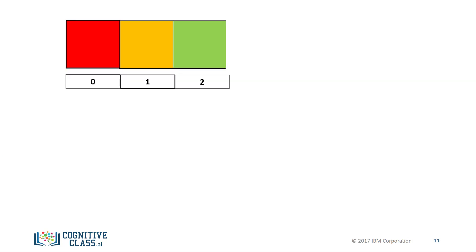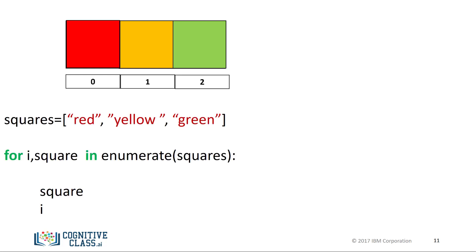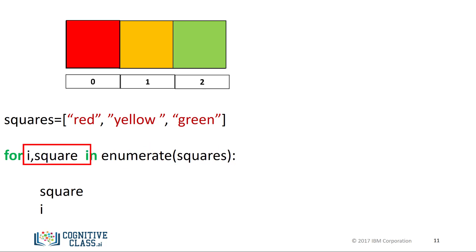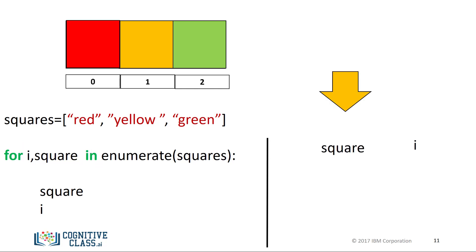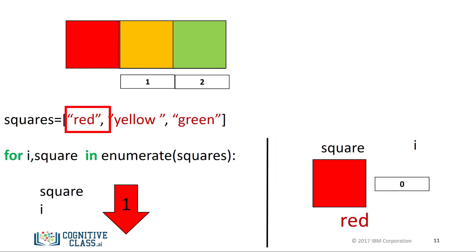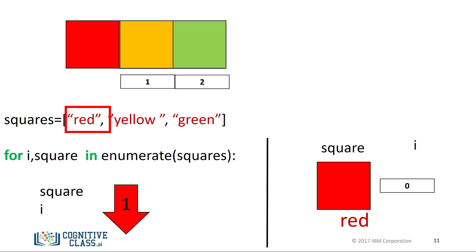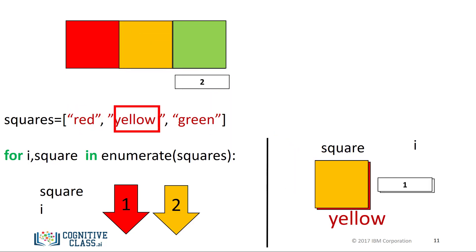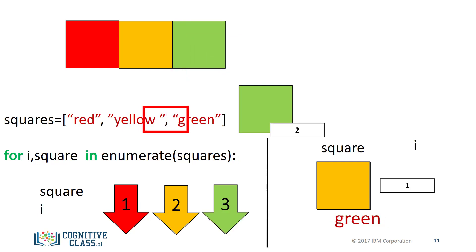A useful function for iterating data is enumerate. It can be used to obtain the index and the element in the list. The argument of the function enumerate is the list — in this case, squares. The variable i is the index and the variable square is the corresponding element in the list. For the first iteration, the value of the variable is red, corresponding to the zeroth index, and the value for i is zero. For the second iteration, the value of square is yellow and i corresponds to its index, i.e. one. We repeat the process for the last index.